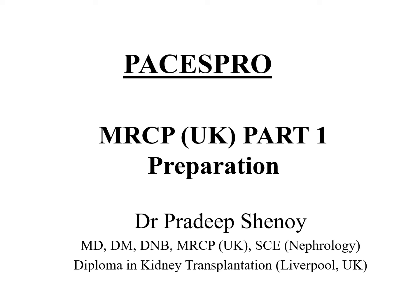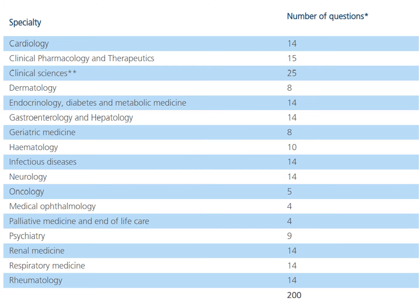Hello everyone, my name is Dr. Pradeep Shinoil from PASAS Pro. We are doing a series of lectures on MRCP Part 1 exam topics. Today's topic is on Rheumatological diseases, which is one of the important chapters in the overall subject as it constitutes about 14 marks of 200, equivalent to major subjects such as cardiology or neurology.